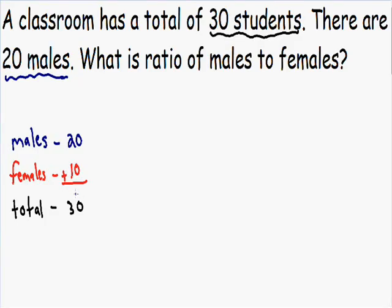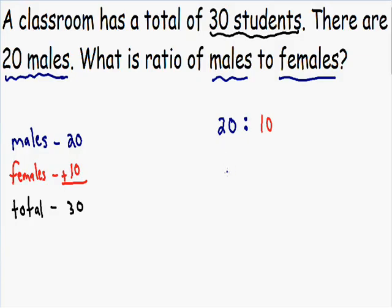At this point we can find the ratio. The question asks for the ratio of males to females, so males go first: 20. Then a colon, then females: 10. Our ratio is 20 to 10. But this is not in simplest form — both numbers can be divided by 10. 20 divided by 10 is 2, and 10 divided by 10 is 1. So our final answer is 2 to 1: for every two males, there is one female.